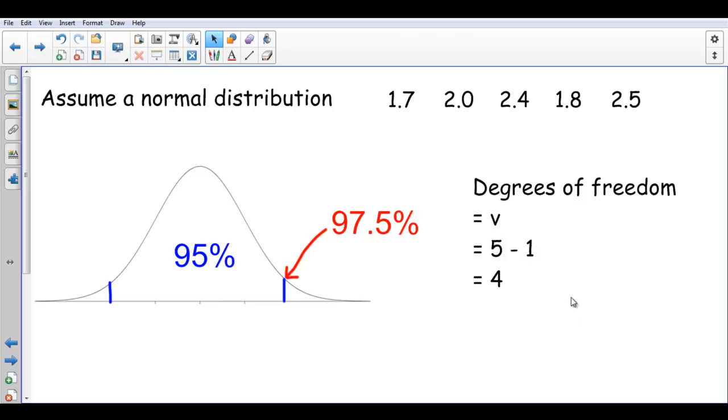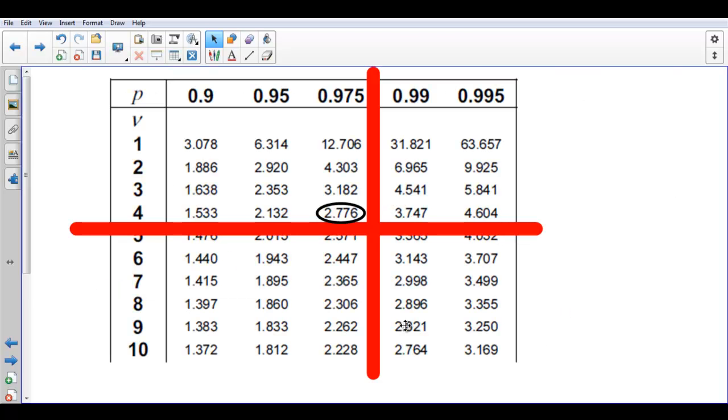Degrees of freedom, dead easy. It's four. So I use this table. This is a zoomed in bit. Degrees of freedom, four. 0.975. That's the tail that I'm cutting off to the left-hand side. So where I've put my line, I cut off 0.975 of the area on the left of that. And reading it off here.